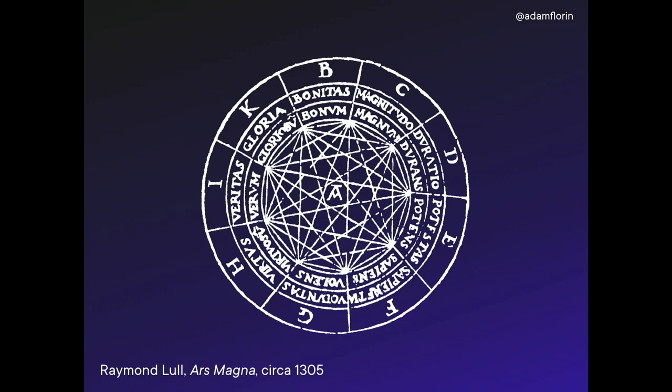What the Ars Magna was supposed to be was part of a big device about Christian theology — how to make arguments about Christian doctrine. But it's two concentric circles that can be conceptually rotated: the outer circle has all these words, the inner circle has all these words, and any combination of two words lets you make a theological argument. This is called, after the fact, combinatorics — the idea of there's this and there's that, you combine them, you can recombine them with anything. Everything is a uniform chunk of information that can be recombined arbitrarily.